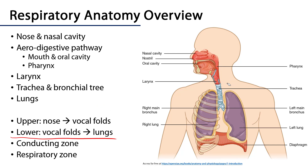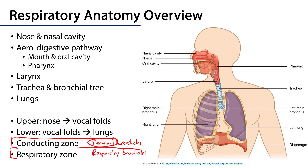We can also divide this physiologically by zones. There is a conducting zone and a respiratory zone. The conducting zone is for pushing air; the respiratory zone is for moving gases in and out of the cardiovascular system. The boundary between the two is found within the bronchioles, where the distal part of the conducting zone are the terminal bronchioles, whereas the proximal part of the respiratory zone are the respiratory bronchioles. The terminal bronchioles are the termini of the conducting zone; the respiratory bronchioles are of the respiratory zone.